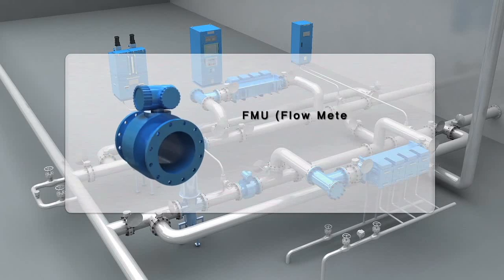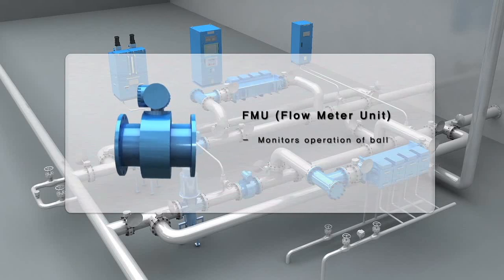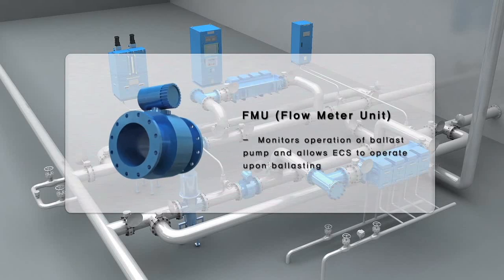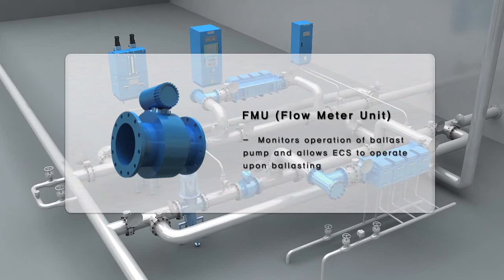FMU is installed in between the ballast pump and the inlet of ECU. It monitors operation of the ballast pumps and assists in the proper functioning of ECS during ballasting.